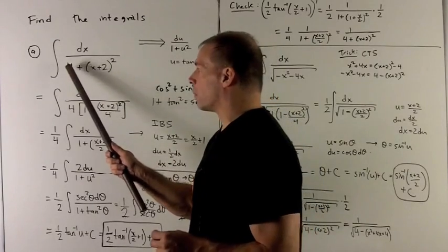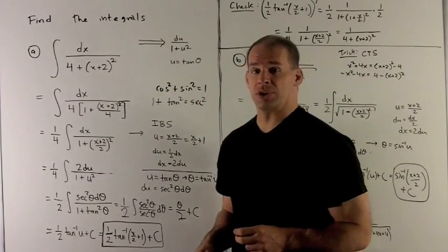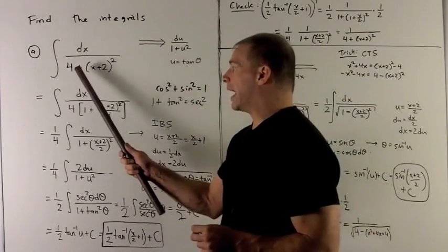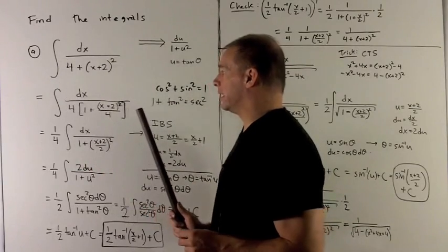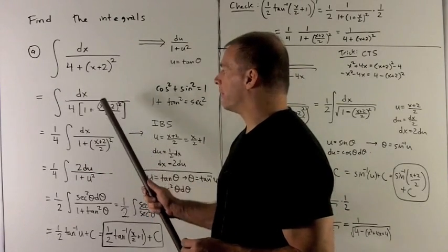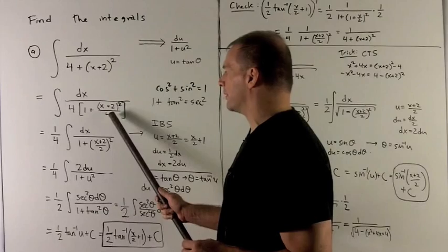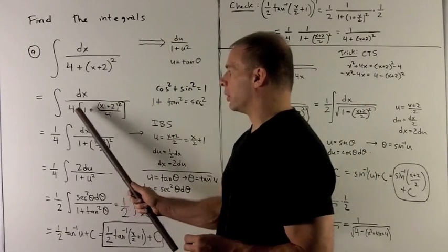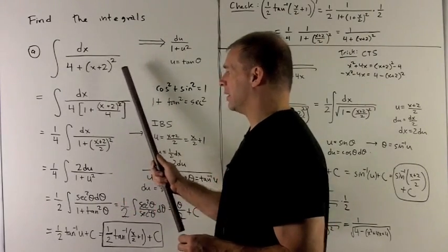So the idea is to target the 4. We want to make sure that gets turned into a 1. The way we do that is to factor 4 completely out of the bottom. So to take a 4 out of x plus 2 squared is the same as just dividing by 4. Note, if I multiply 4 through, I get back to the original.